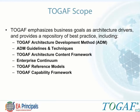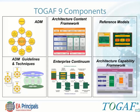The TOGAF ADM is an iterative approach to planning, designing, realizing, and governing the architecture. ADM Guidelines and Techniques are guidelines to adapt the ADM and techniques to support application of the ADM. The TOGAF Architecture Content Framework is a detailed model of architectural work products. The Enterprise Continuum is a model for structuring a virtual repository and methods for classifying architecture and solution artifacts. The TOGAF Capability Framework is a structured definition of the organization's skills, roles, and responsibilities needed to establish and operate an enterprise architecture.